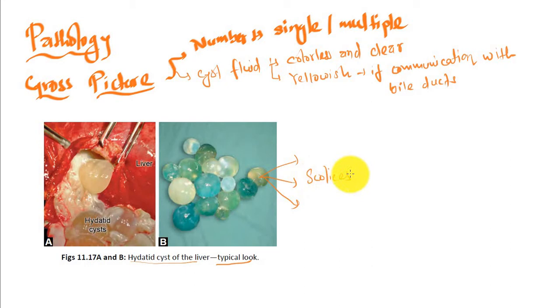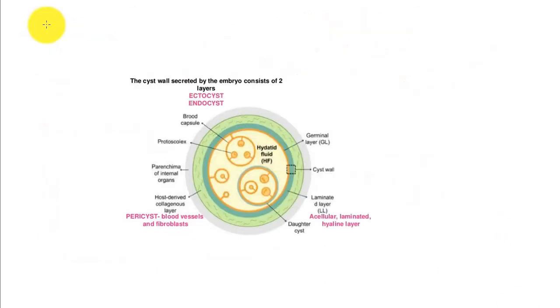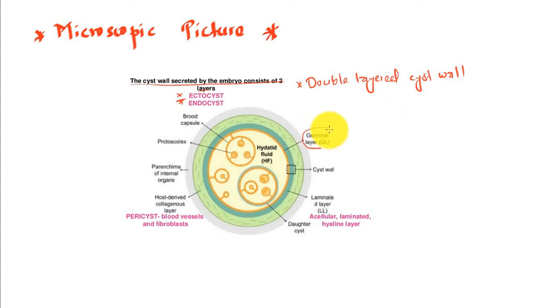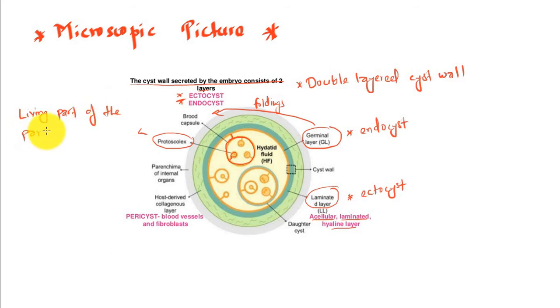This is the microscopic picture of hydatid cyst. The cyst wall is formed of ectocyst and endocyst, a double-layered cyst. The germinal layer is the endocyst, while the laminated layer, which is acellular, is the ectocyst. The endocyst gives foldings which form brood capsules, and inside the brood capsule is the protoscolex, which is the living part of the parasite.